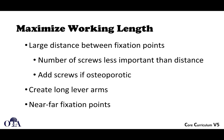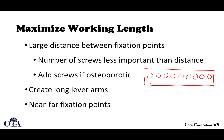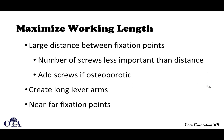Maximize your working length: you want a large distance between fixation points when possible. The number of screws is less important than the distance of where you place them. If you have a plate with screw holes along its length and you're placing two screws, put them at the far ends rather than close together. Similarly, with four screws, spread them out to maximize working length. If you're osteoporotic, you may need locking screws, additional screws, and near-far fixation points to increase working length.